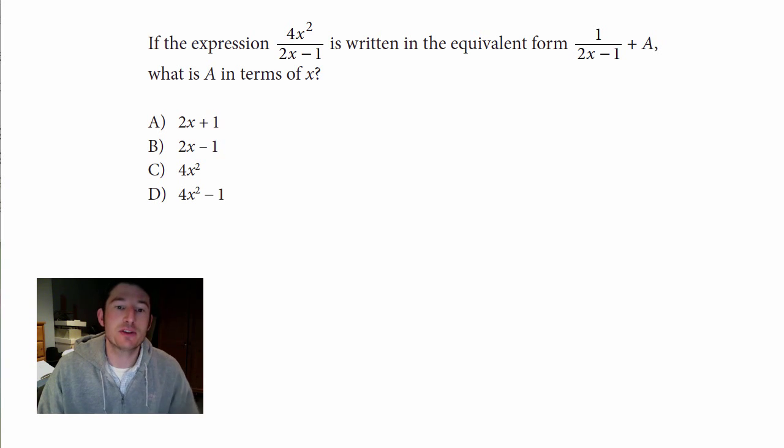It says, if the expression 4x squared over 2x minus 1 is written in the equivalent form 1 over 2x minus 1 plus A, what is A in terms of x?